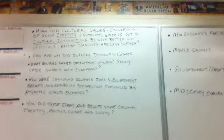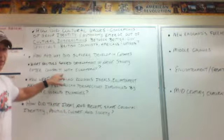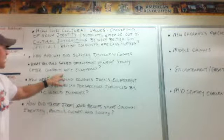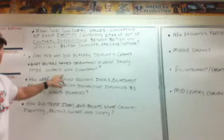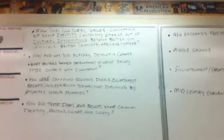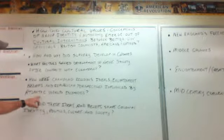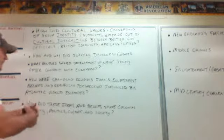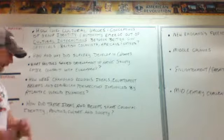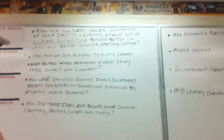What factors shaped the development of Native society after contact with Europeans? Think about the Quakers and early Indian slavery — the English did enslave Indians on plantations early on, though they didn't make very good slaves. How are changing religious ideals, Enlightenment beliefs, and Republican perspectives influenced by Atlantic world exchanges? People brought Enlightenment ideas over on ships, migrating to the New World and bringing those beliefs, cultures, and customs with them.